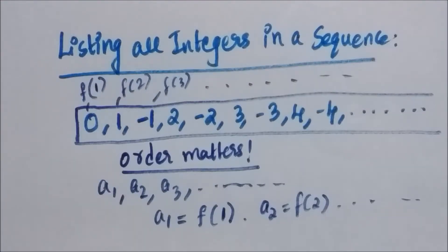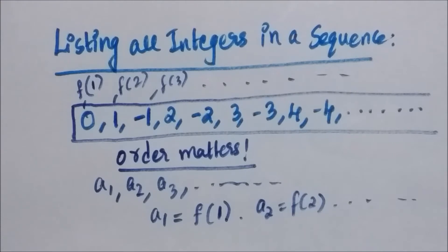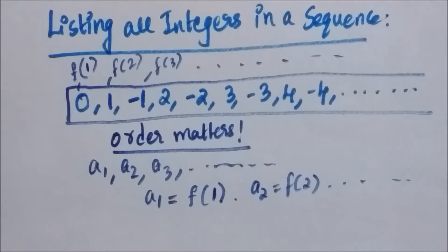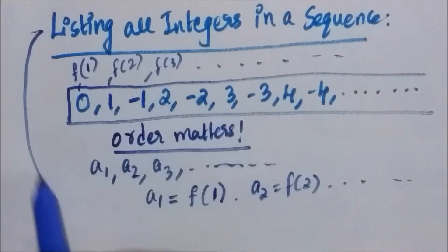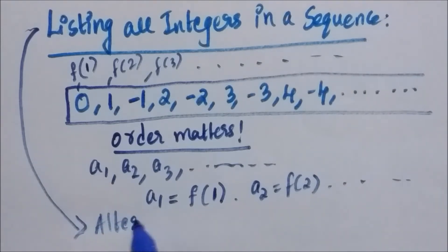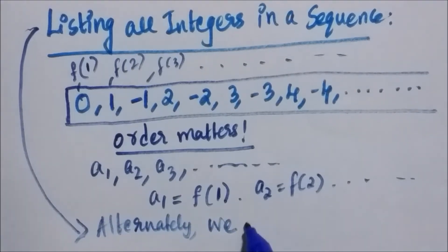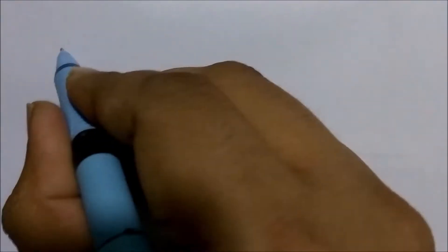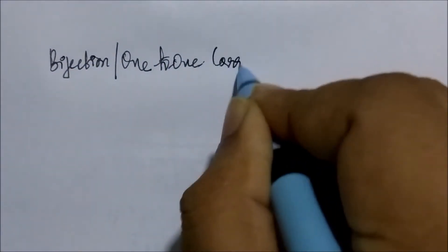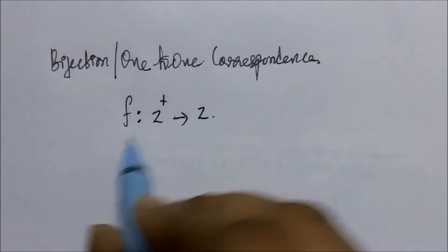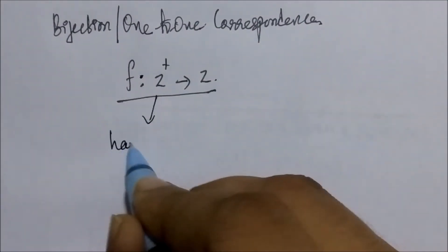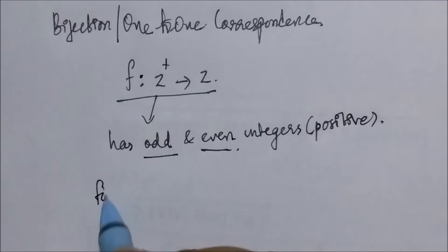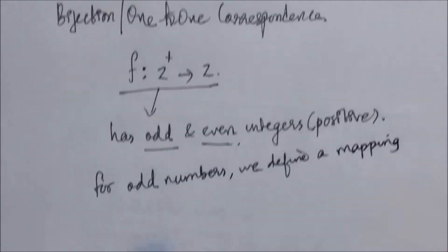So here, when we write the integers in a sequence like 0, 1, -1, 2, -2, 3, -3, and so on, what we mean is that 0 is f(1), 1 is f(2), -1 is f(3), and so on. So instead of showing the sequence first, we could have alternatively defined a bijection f to show that the integers set is countable. Now here we define a bijection f from the set of positive integers to the set of integers. Note that the set of positive integers has both odd and even positive integers, so we separately define a mapping for odd positive integers and even positive integers.